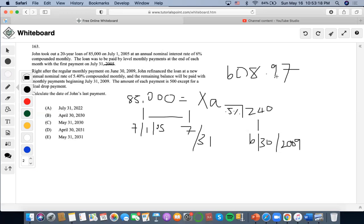So we did find the level payments, right? But it says that right after this regular monthly payment occurring at this date, John refinanced the loan. So first of all, we want to find out how many payments have occurred between this interval, or basically we want to find out what the outstanding balance is of the loan by this date to refinance the whole loan completely. In order for us to do that, we know that level payments are $608.97, right?